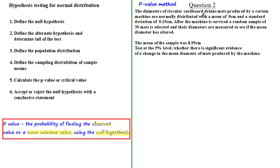Let's look at the next question. The diameters of circular cardboard drinks mats produced by a certain machine are normally distributed with a mean of 9 centimeters and a standard deviation of 0.15 centimeters. After the machine is serviced, a random sample of 30 mats is selected and their diameters are measured to see if the mean diameter has altered. The sample mean was 8.95 centimeters. Test at the 5% level whether there is significant evidence of a change in the mean diameter. The first step is to define H0: μ = 9.